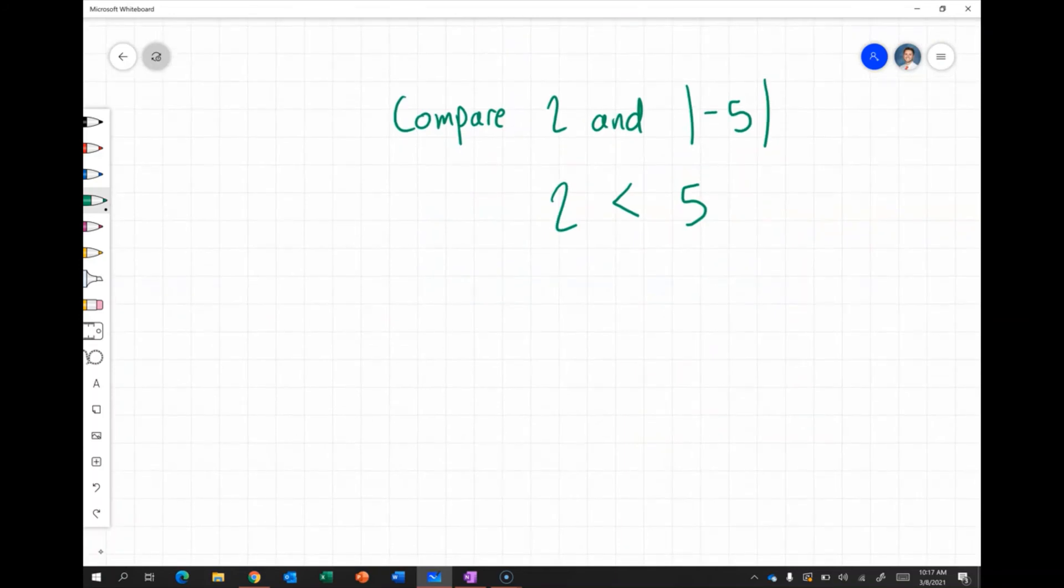If we wanted to compare the absolute value of 3.5 and negative one, well, the absolute value of 3.5 is 3.5. So we're comparing 3.5 and negative one, and we know that a positive number is always greater than a negative number.